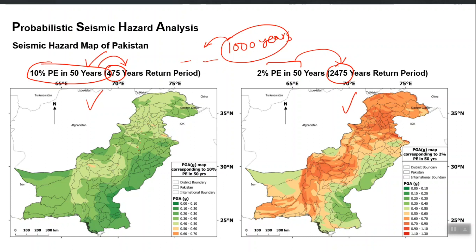For bridges we may use a 1,000-year return period as the design level. For buildings we use 475 years, and for dams and important hydraulic structures we may go for a 3,000-year return period. The PGA value will be even higher for 3,000-year return period compared to 2,475 years. Similar maps can be made for SS or S1 — it is all about what number you pick from which hazard curve. Ultimately, the hazard curve is the main output at each point.